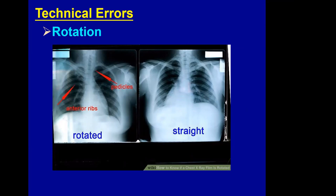Looking at the comparison films, note that one is placed backwards — the cardiac shadow should be on the left rather than the right. This is another thing to watch for when reviewing a radiograph on a view box or digital display.